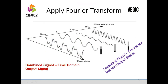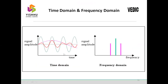Let us now see the terminology of time domain output signal. The original signal, combined signal, or complex signal is mathematically termed as a time domain output signal. If we apply Fourier transform to the combined signal, it generates simple separated signals or simple sine waves. Fourier transform helps us in converting the time domain signal to a frequency domain output signal. Time domain signal is otherwise termed as an analog signal or continuous signal; frequency domain signal is otherwise termed as a discretized signal.